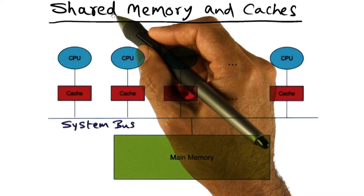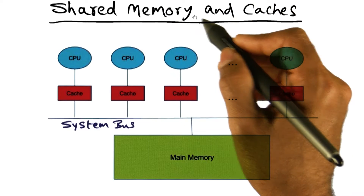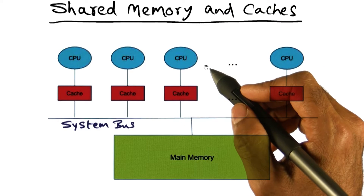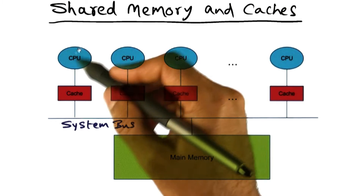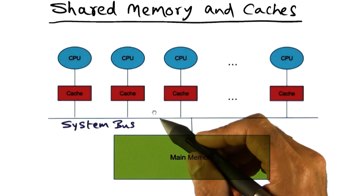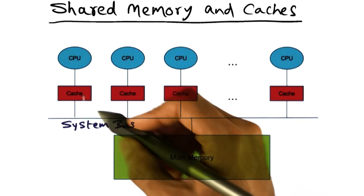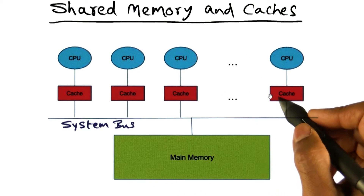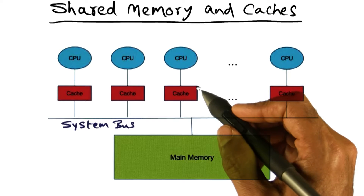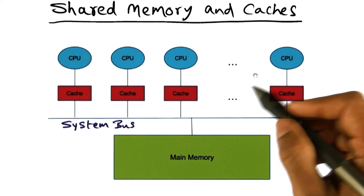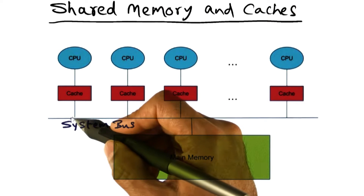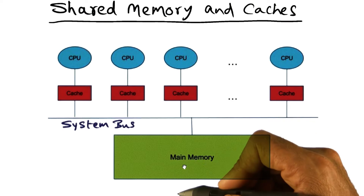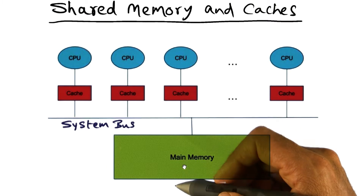Now let's start discussing shared memory and the private caches. In order to simplify the discussion, I'm using the simplest form of the shared memory machine — an SMP — where there's a single system bus that connects all these processors to talk to the main memory.